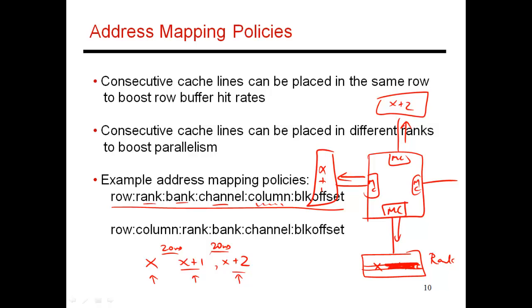They won't be row buffer hits initially, but if there's enough locality, maybe they will be as well. These are alternative ways to place data in different parts of the memory system. In one case, you prioritize row buffer hits. In the other case, you prioritize memory level parallelism while fetching these blocks of data.